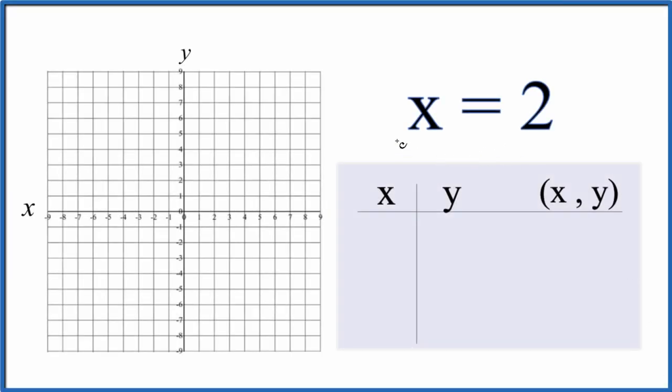Let's graph the linear equation x equals 2. So when we look at this x equals 2, x always equals 2, no matter what value we have for y. What that means is we go over to 2 right here on the x-axis, we can just put a straight line here.